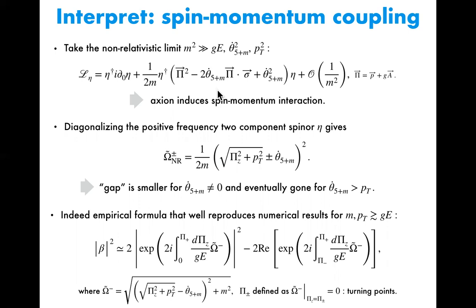Once you introduce the axion velocity or axion coupling, on top of the usual kinetic term you also have an additional term involving sigma, the Pauli matrix. This means there exists an interaction between the momentum and the spin of the fermion — in other words, the axion induces a spin-momentum interaction of the fermion. Studying the dispersion relation in this case, the gap size is now controlled by this interaction. Without axion velocity, the gap size is P_T squared divided by 2M, so there is a suppression factor from P_T.